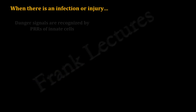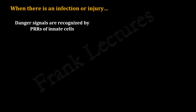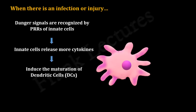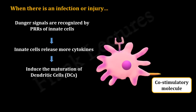These danger signals are recognized by pattern recognition receptors of innate system cells, and these cells release more cytokines. Immature dendritic cells are broadly distributed in the peripheral tissues of our body. The cytokines released by innate cells induce the maturation of these immature dendritic cells, which then start expressing co-stimulatory molecules on their surface. Dendritic cells also have their own pattern recognition receptors that can bind danger signals directly, resulting in their activation.